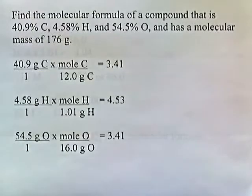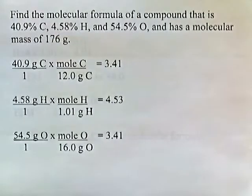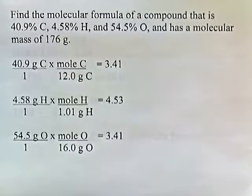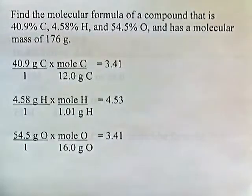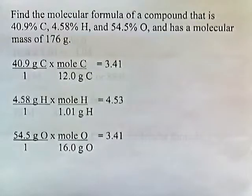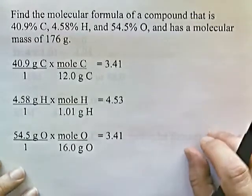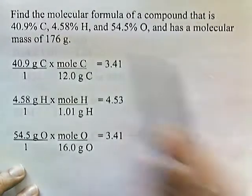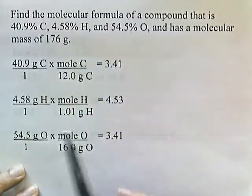One more problem. Find the molecular formula of a compound that is 40.9% carbon, 4.58% hydrogen, and 54.5% oxygen, and has a molecular mass of 176. We don't have the empirical formula, so we must find it first, then use it to find the empirical formula mass, and then find the ratio of molecular mass to empirical formula mass.